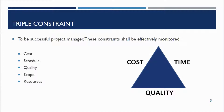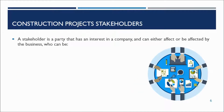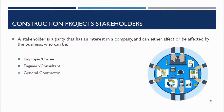The PMBOK 6th edition added scope and resources as additional constraints. Project stakeholders may have different ideas as to what successful completion of a project will look like and which factors are the most important. A stakeholder can be an employer, engineer, general contractor, subcontractors, suppliers, or regulatory and approval agencies.